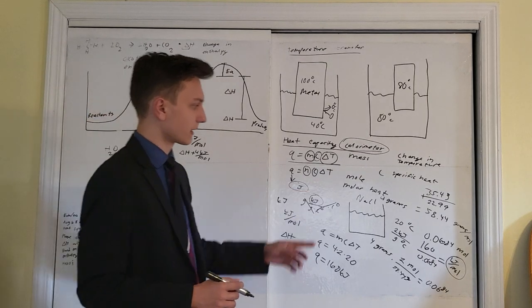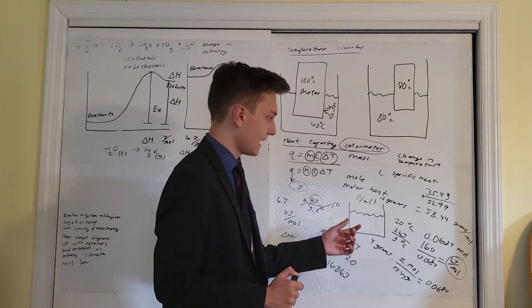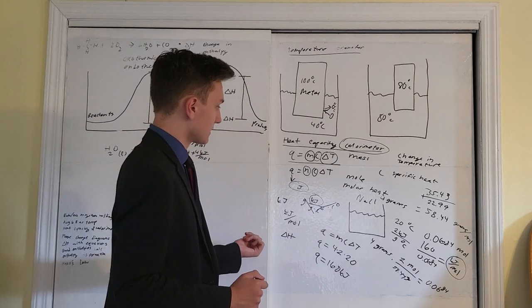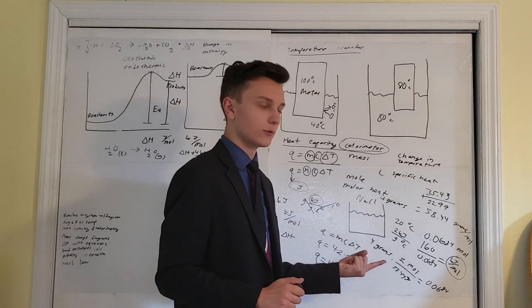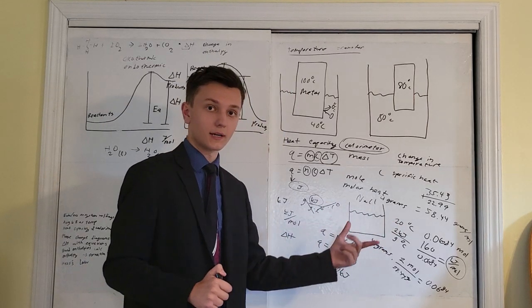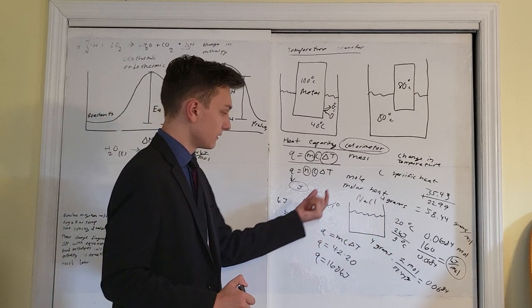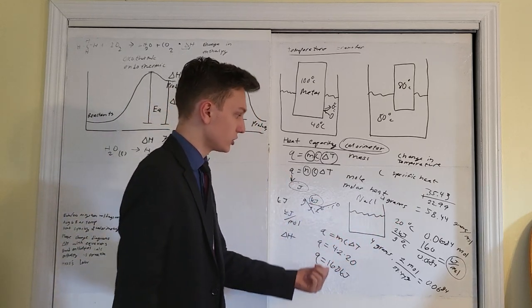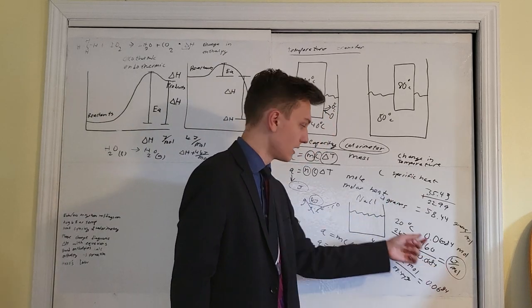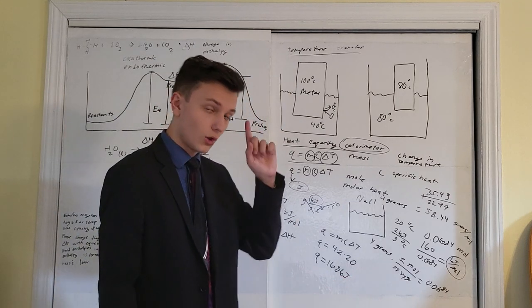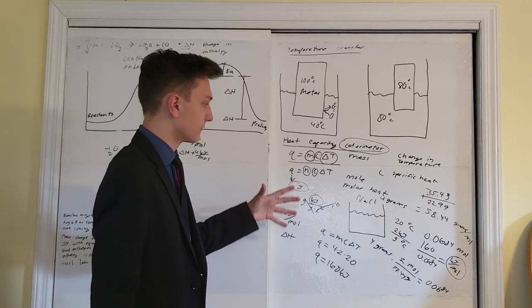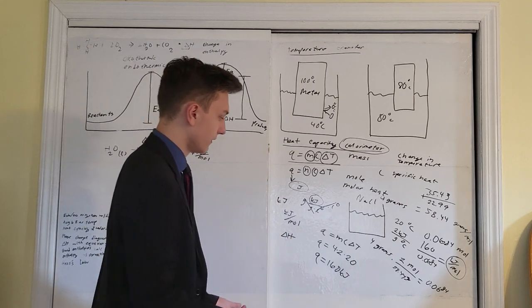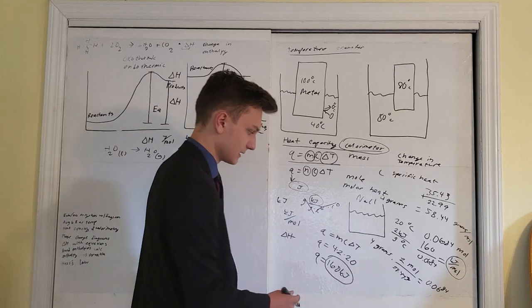Pay attention to your sign. Going back to our calorimetry FRQ: since temperature increased by 20°C, that means the products lost energy — it's an exothermic reaction. So the molar enthalpy change would be negative 160 divided by 0.0684. If the question asked how much energy the environment absorbed, that would be positive 160 kJ.